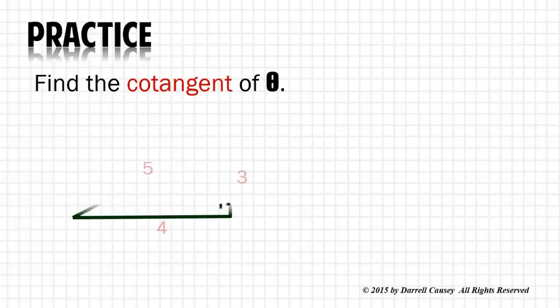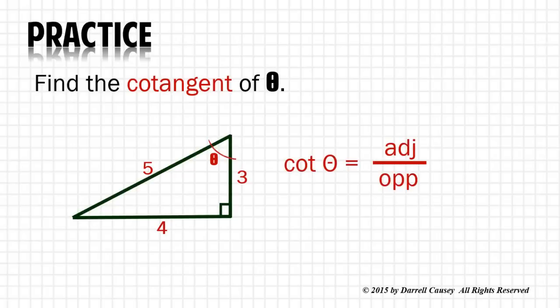To find the cotangent of θ, we just take tangent and flip it over, which gives us the adjacent over opposite sides: 3 over 4.